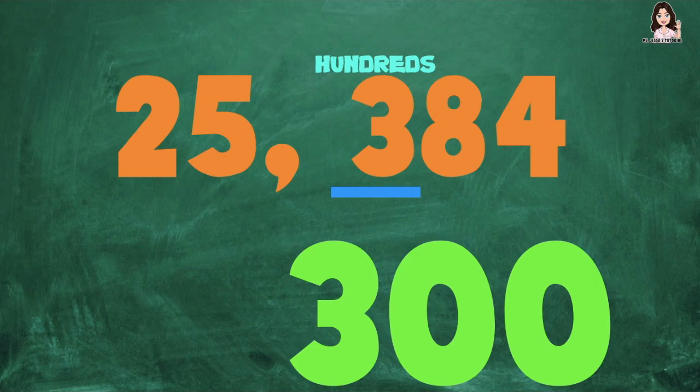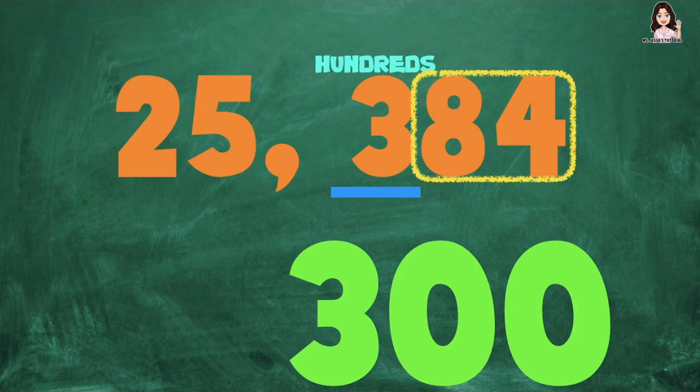Always remember, children: all the digits to the right of digit 3 will become 0. The value of digit 3 at the hundreds place is 300.